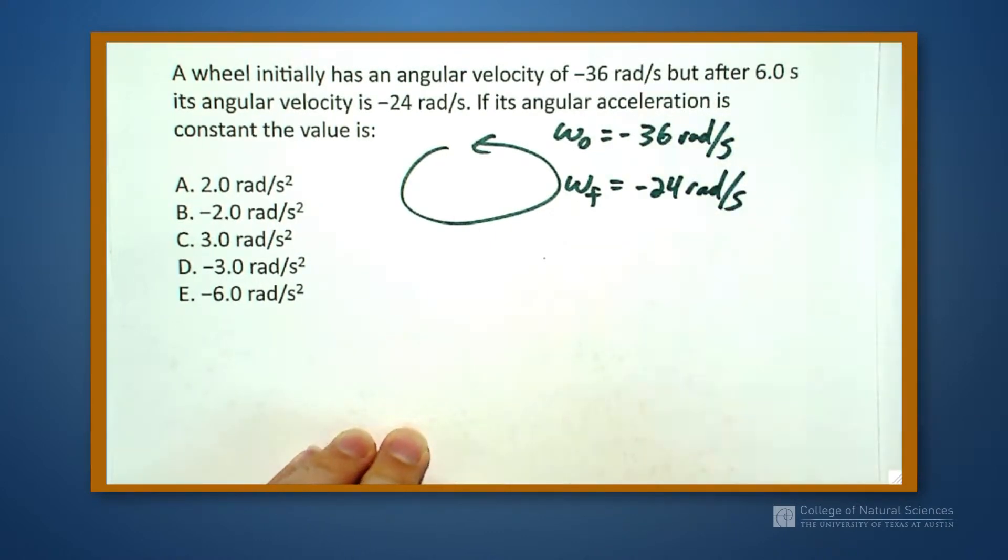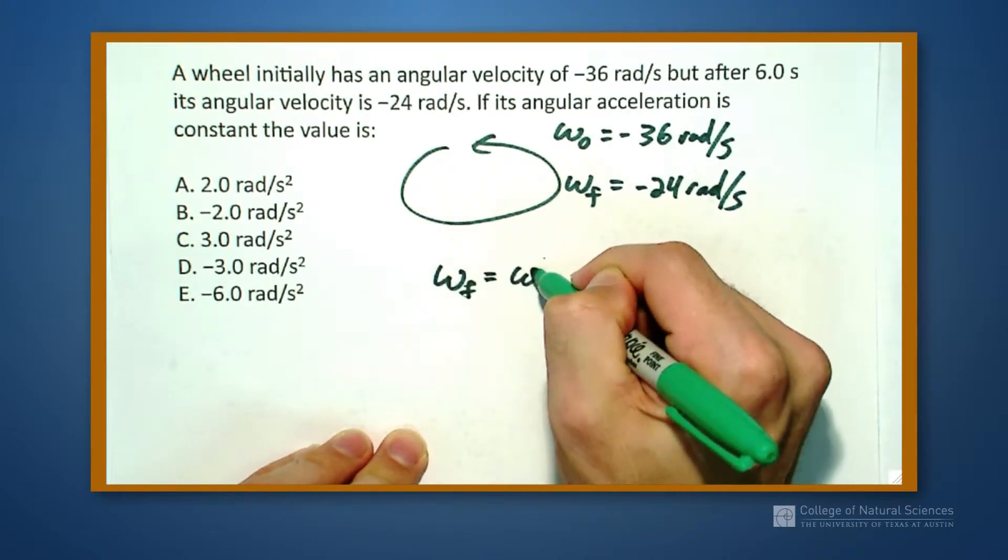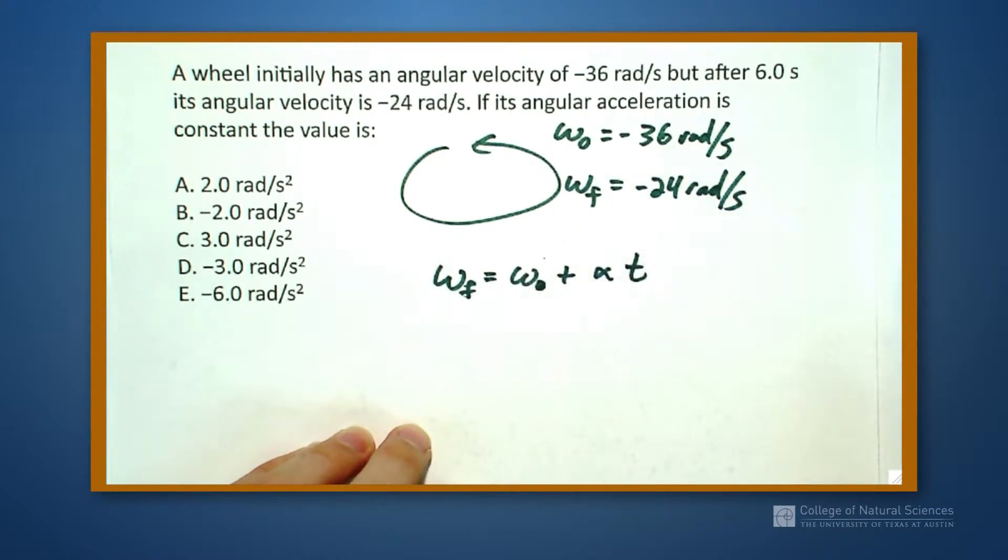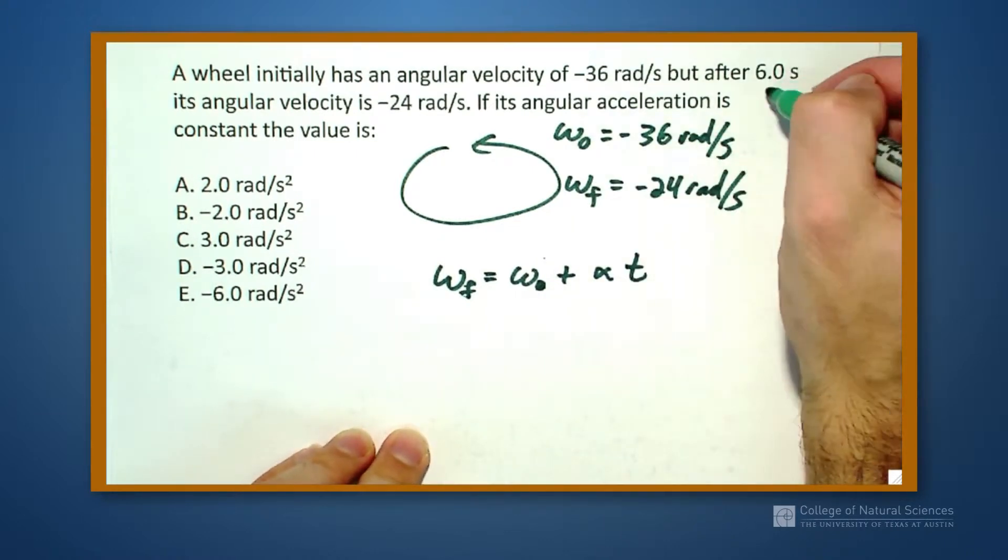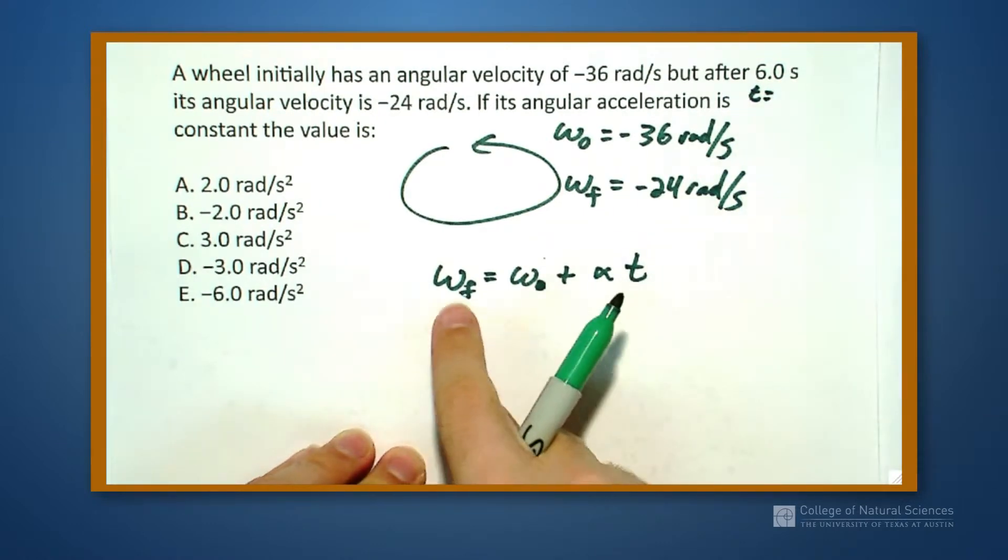And I know that I have one of my kinematic equations for rotations that say omega final is equal to omega initial plus alpha t. And I look and I see that I have my time is equal to 6 seconds up here. So I have omega final, omega initial, and alpha t.